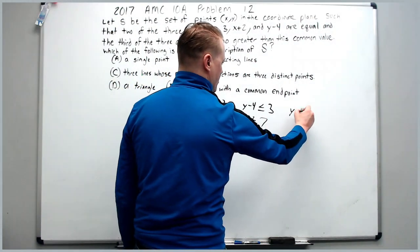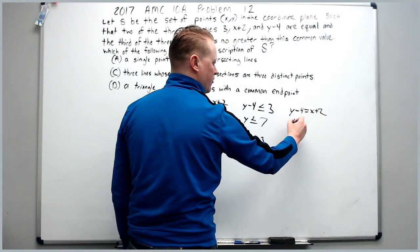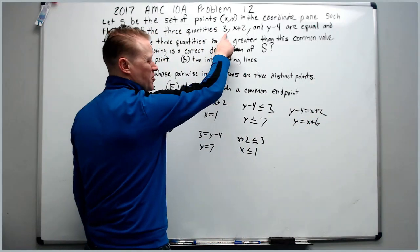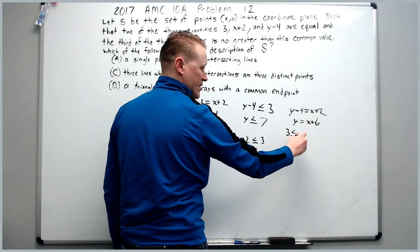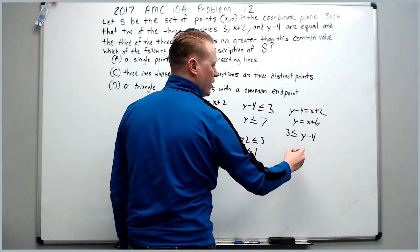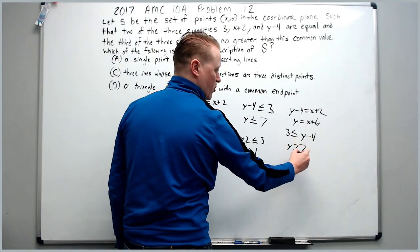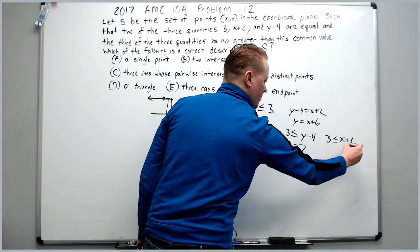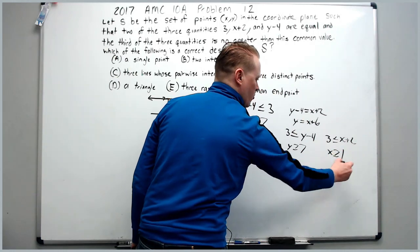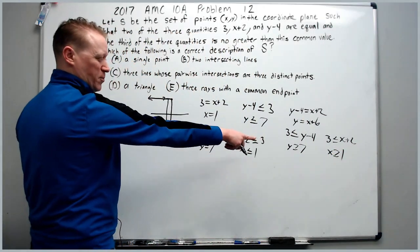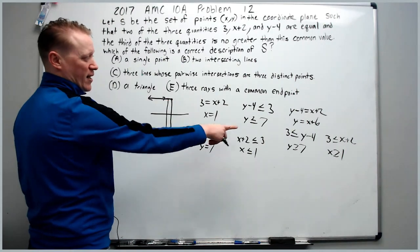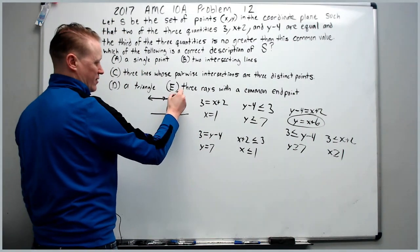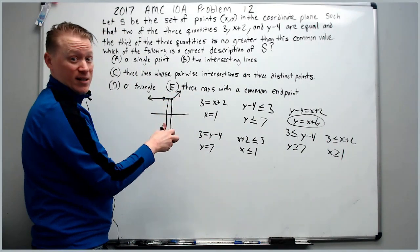Next we say y-4 equals x+2. Move the 4 over to get y = x+6. We also say that 3 is no greater than, which is less than or equal to, y-4. If I move the 4 over, I'll get y ≥ 7. In addition, 3 ≤ x+2 and x ≥ 1. So start at the point (1,7), which is right here. My slope is 1 for y = x+6, so it's coming out like this. And actually, it points right at the answer.